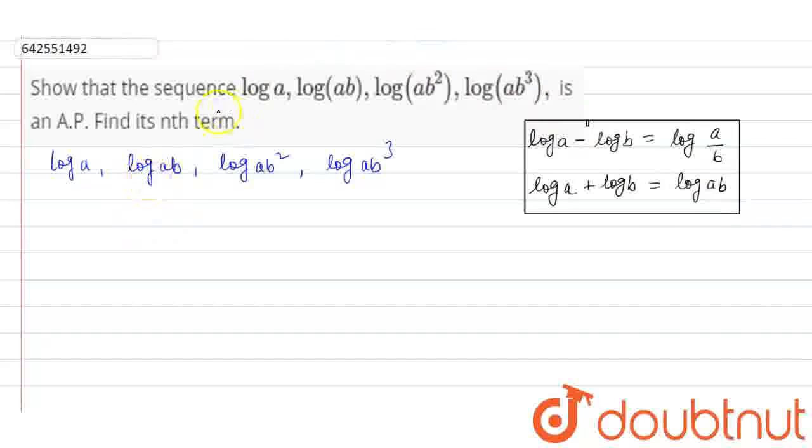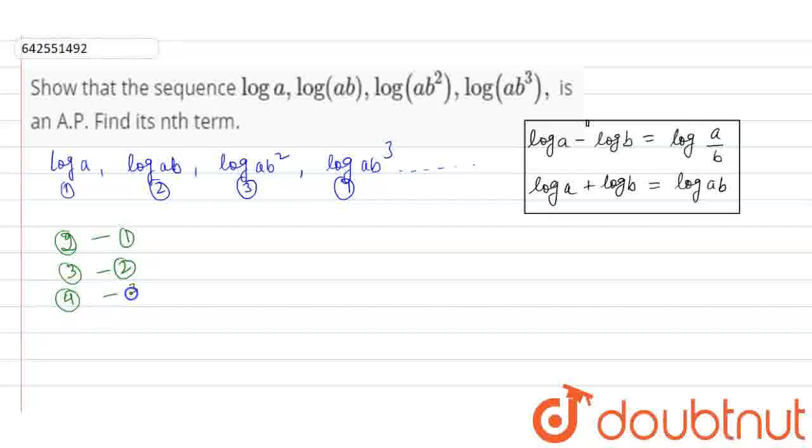Now we have to show that these terms are in A.P. This is our first term, second term, third term, fourth term, and so on. We will subtract second term minus first term, third term minus second term, and fourth term minus third term.